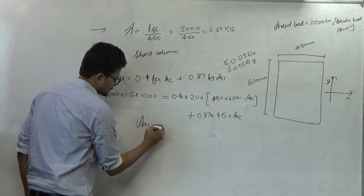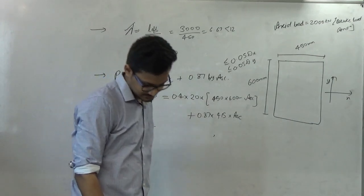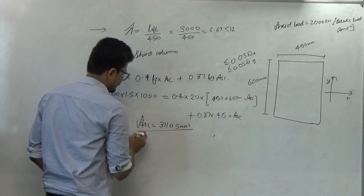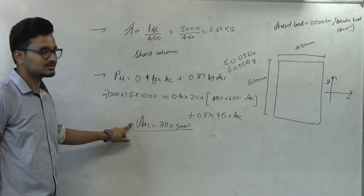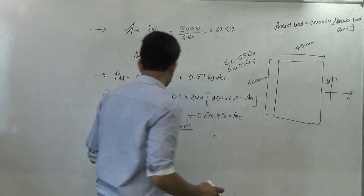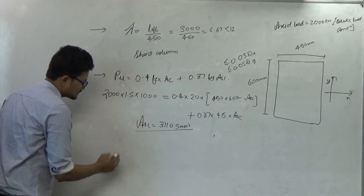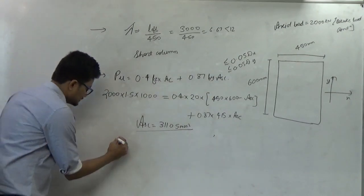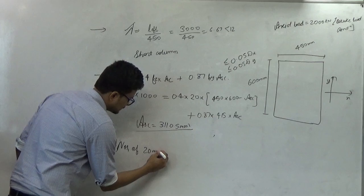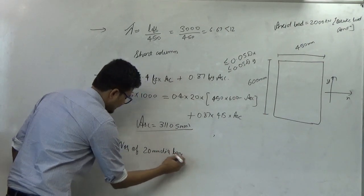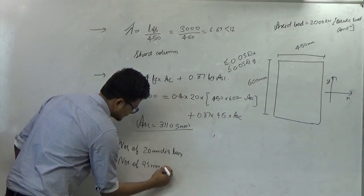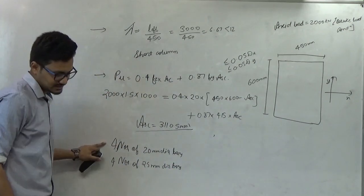The value of Asc comes out to be approximately 3115 mm². This is the area of reinforcement we must provide to prevent failure of the compression member. We choose 4 numbers of 20 mm diameter bars and 4 numbers of 25 mm diameter bars as the combination.